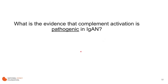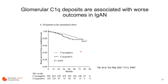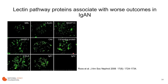Is there specific evidence that complement activation is pathogenic and plays a role in IgA nephropathy? Most of what we have is indirect, associative evidence. One study looked at the deposition of C1Q, a classical pathway protein, in IgA nephropathy. The authors found that when C1Q deposits were present, renal survival was worse. However, C1Q was only seen in a small subset of patients — about 14% — so classical pathway activation appears associated with worse outcomes but only in a minority of patients.